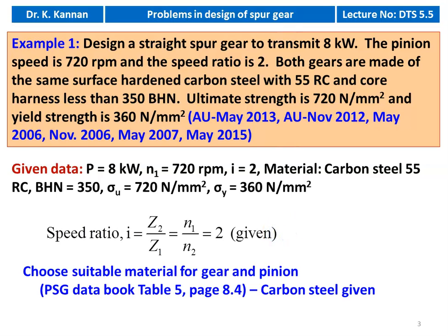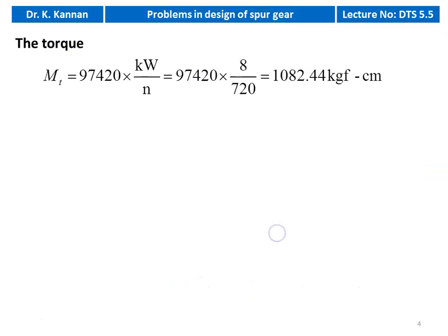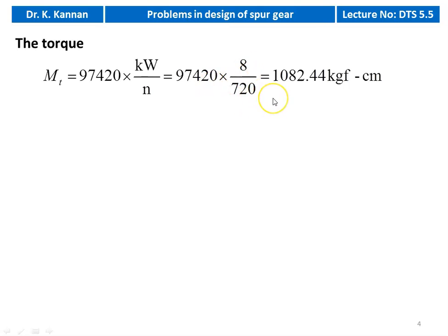Choose the material for the gear and the pinion — here it is given as carbon steel. Then we calculate the torque: MT equals 97,420 × power in kilowatt divided by pinion speed, which is 97,420 × 8 / 720, giving 1082.44 kgf·cm.